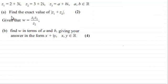In part a we've got to find the exact value of the modulus of Z1 plus Z2 for 2 marks, and then given that w equals Z1 times Z3 all divided by Z2 for part b, find w in terms of a and b giving your answer in the form x plus iy, where x and y are real numbers for 4 marks.